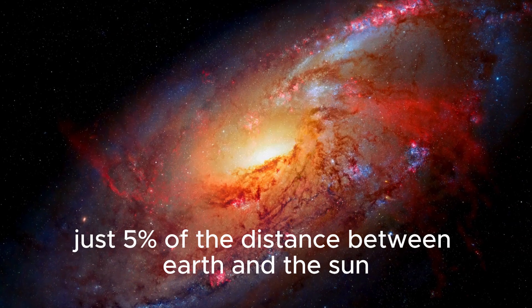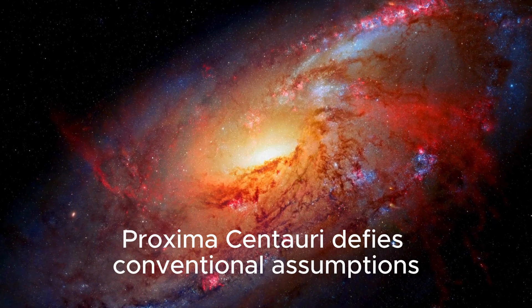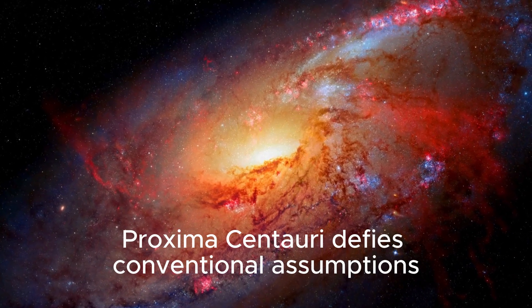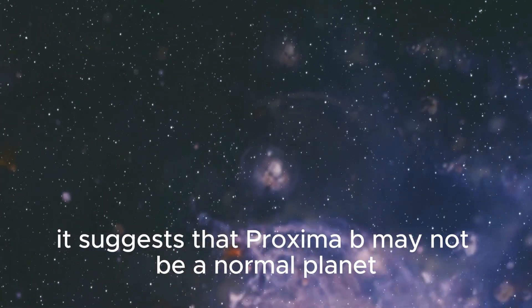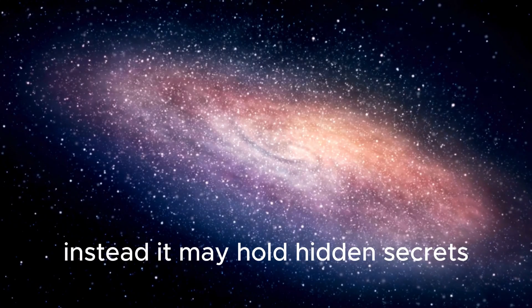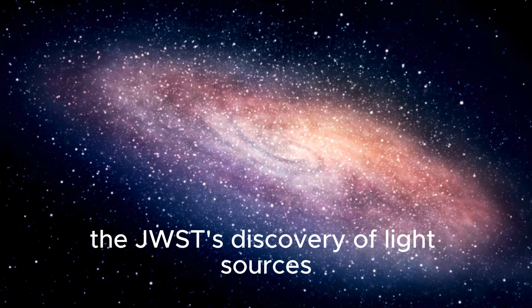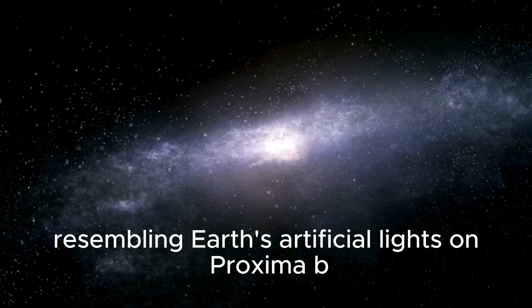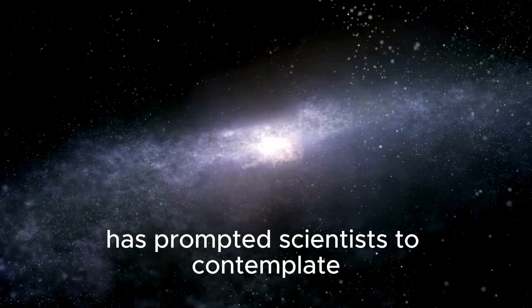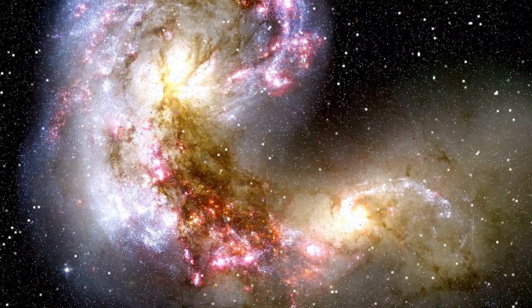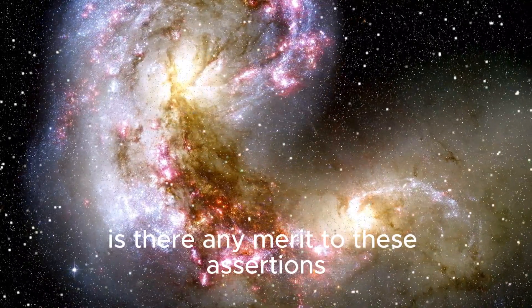It suggests that Proxima b may not be a normal planet, instead, it may hold hidden secrets. The JWSD's discovery of light sources resembling Earth's artificial lights on Proxima b has prompted scientists to contemplate the possibility of extraterrestrial life. Is there any merit to these assertions?